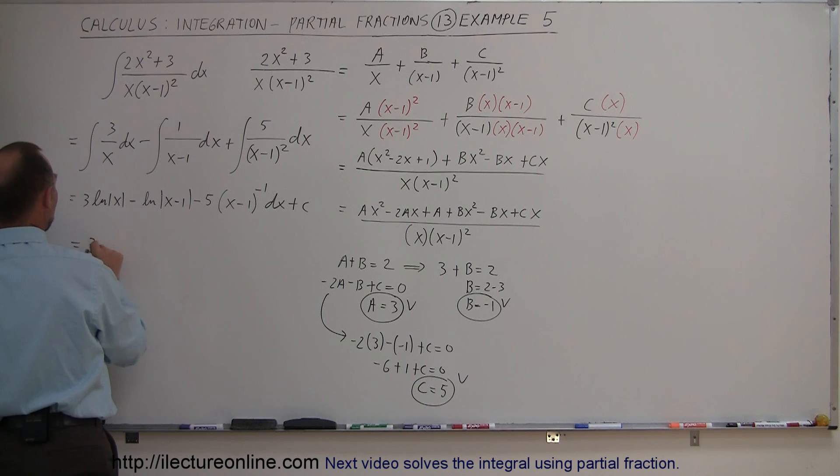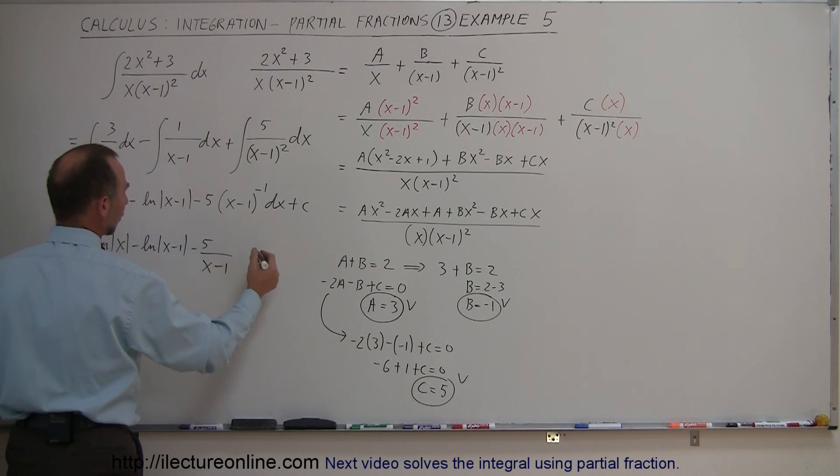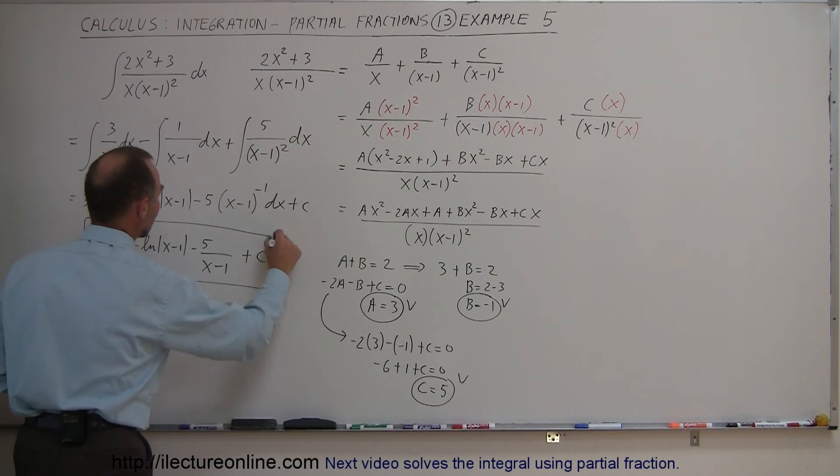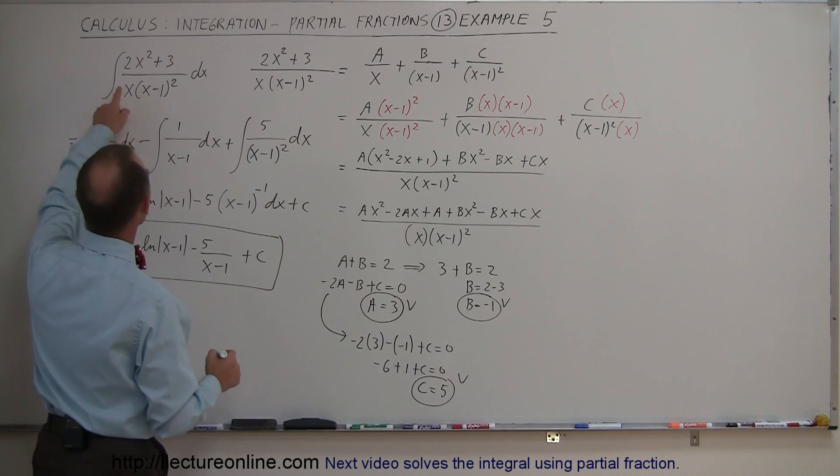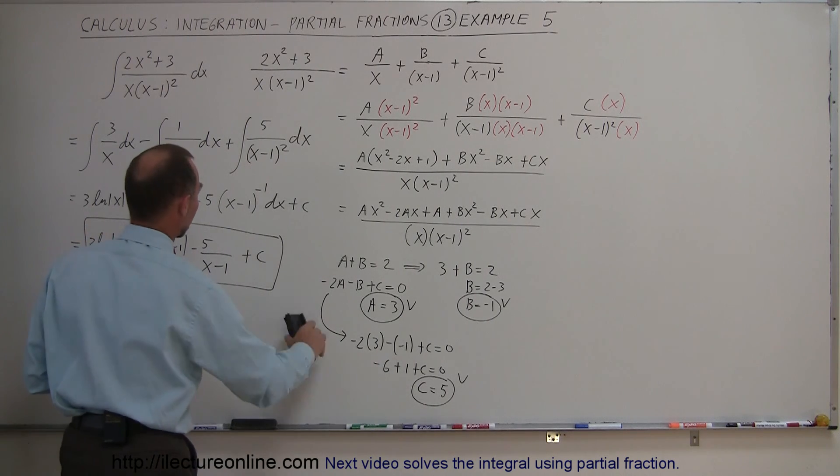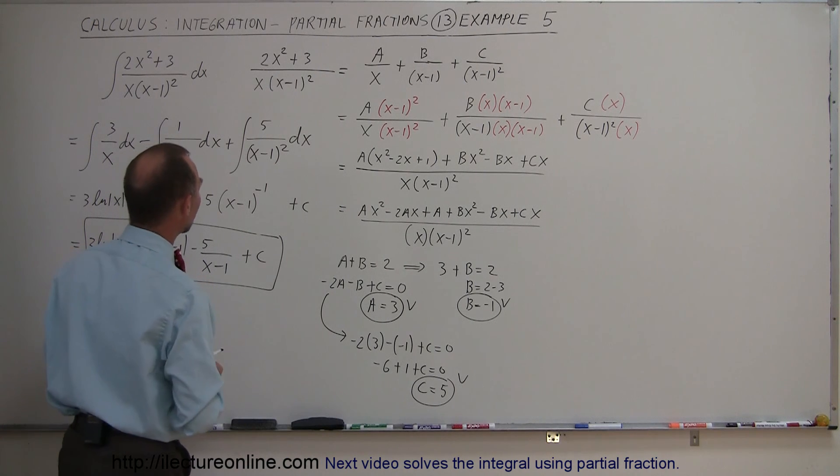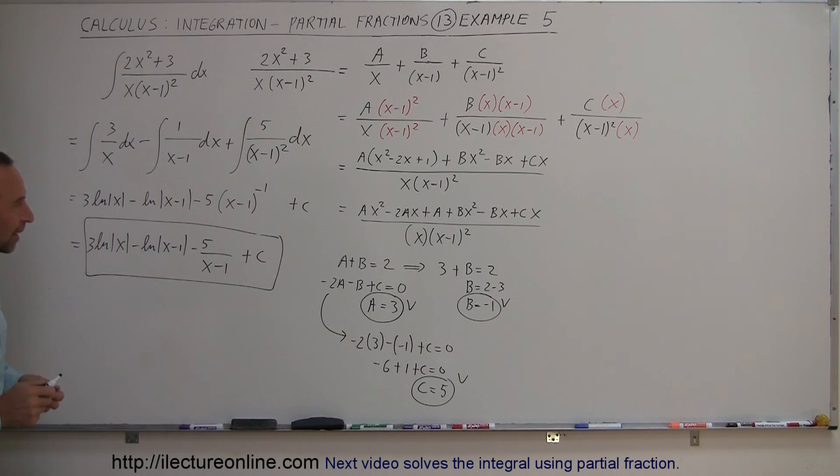Or we can write this as 3 times the natural log of x minus the natural log of x minus 1 minus 5 divided by x minus 1 to the first power plus a constant of integration and here we have the integral or the result of this particular integral. That doesn't belong there anymore. We're done with the dx's at that point. Okay, very good. That's how we do that.